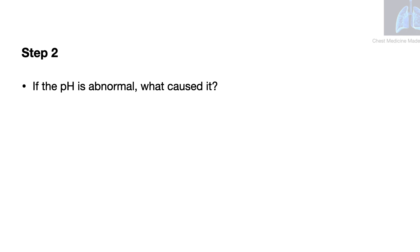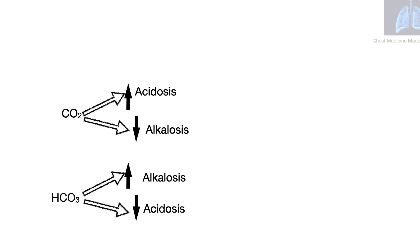Step 2: If the pH is abnormal, what caused it? Recall that when the carbon dioxide level increases, it is a respiratory acidosis. When the carbon dioxide level falls, it is a respiratory alkalosis. When the bicarbonate level increases, it is a metabolic alkalosis, and when the bicarbonate level falls, it is a metabolic acidosis.